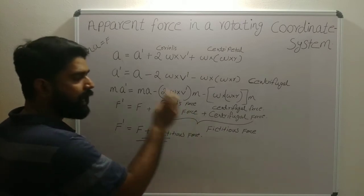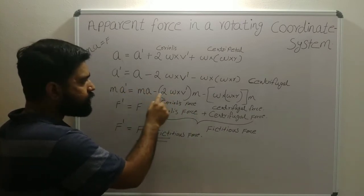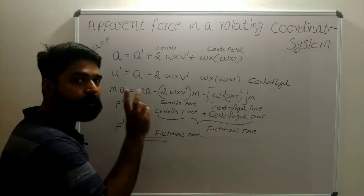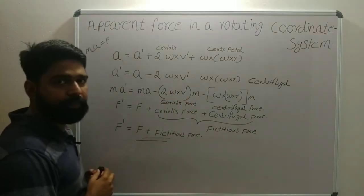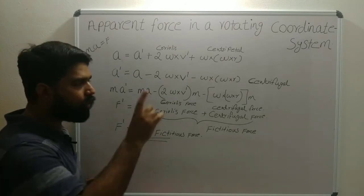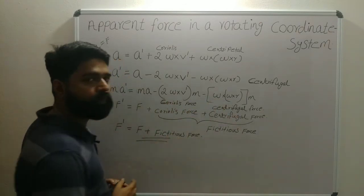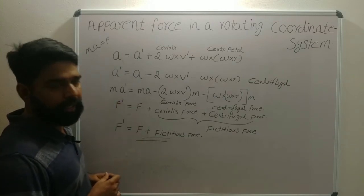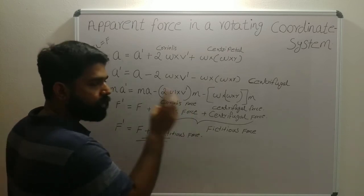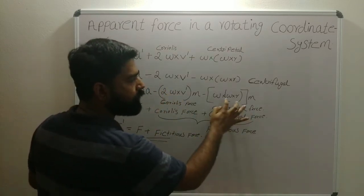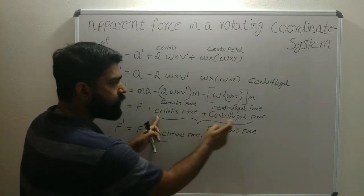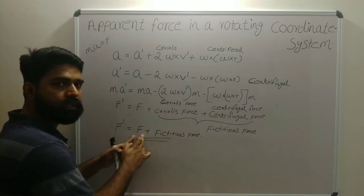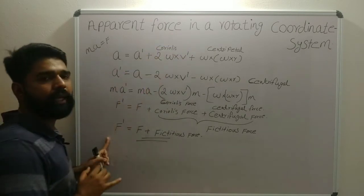The Coriolis force is -2m(ω×v'), so it depends on two parameters: omega and v prime. In the case of centrifugal force, there is only one parameter — omega, the angular velocity of the rotating frame. The summation of Coriolis force and centrifugal force is known as fictitious force, and the sum of fictitious force and true force gives the apparent force in a rotating coordinate system.